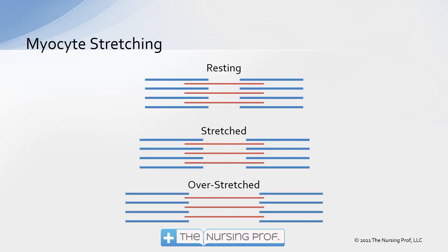Let's look at the myocytes now in illustration. In the resting state, the filaments overlap each other with room to contract — the blue pieces moving over the red pieces. In the stretched illustration, they are stretched out a little more. This is what happens with a normal volume change in the heart; stretching those muscle cells causes a stronger contraction. But look at the overstretched illustration — now there's not enough overlap between the red and blue pieces for a strong contraction. This is what happens in heart failure: the heart muscle cells become overstretched and can no longer contract normally.